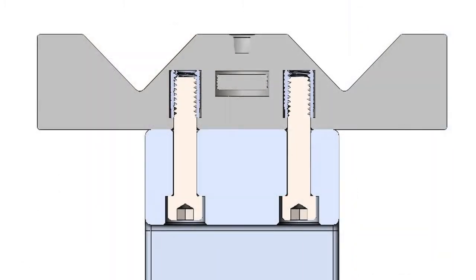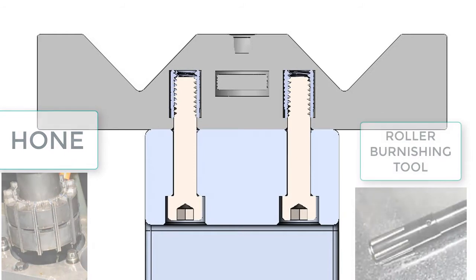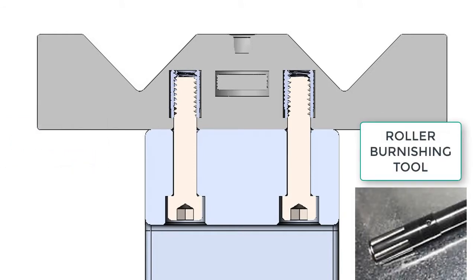When the reamer cannot obtain the required surface finish, the hole can be honed or burnished to the desired surface finish. These operations will remove minimal amount of material, typically two to three ten-thousandths of an inch.